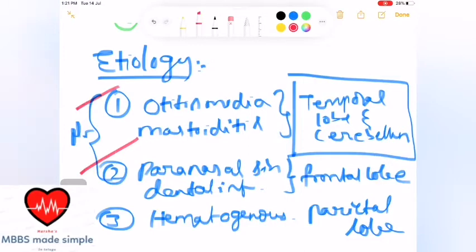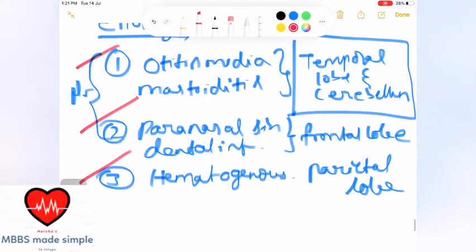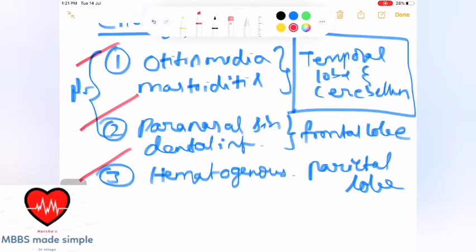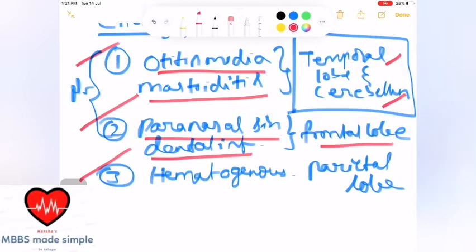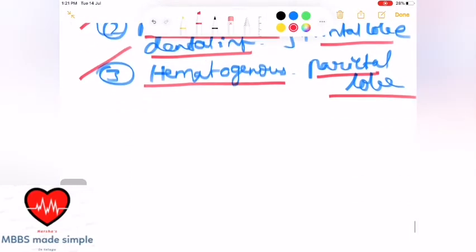So these three points: otitis media and mastoiditis affect temporal lobe and cerebellum through direct spread. Paranasal sinuses and dental infections affect frontal lobe. Hematogenous spread affects parietal lobe.